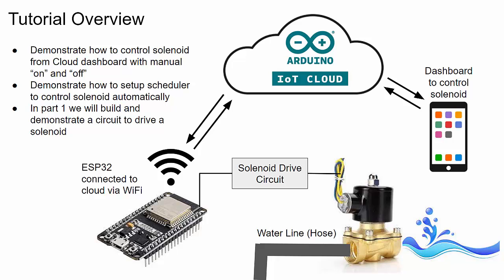Here's an overview of what we plan to cover in part one and two. We're going to start with a linear solenoid integrated with a valve to control water, gas, or oil flow. We'll talk about the hardware, what it takes to drive a solenoid circuit, and give an overview of what a solenoid is. We're going to be using an ESP32 because of its Wi-Fi capabilities to control our solenoid and also to connect to the Arduino IoT Cloud.